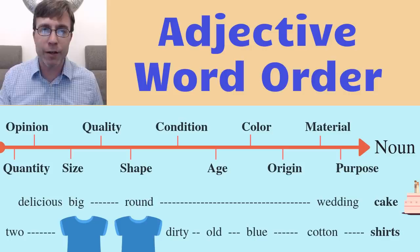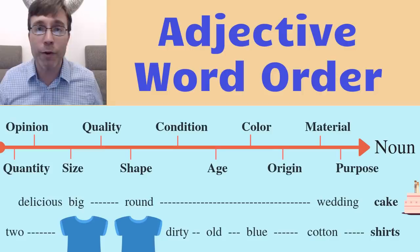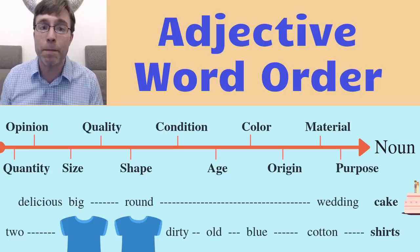The first adjective in the order, if you're talking about quantity — for example, some shirts, many shirts, or even a number like one, two, three — that is going to be the first adjective you use. The next one would be an opinion. For example, if you're talking about your opinion, something is delicious or maybe amazing — whatever your opinion is, that would be the next order. Then we're talking about size: big, little, small.